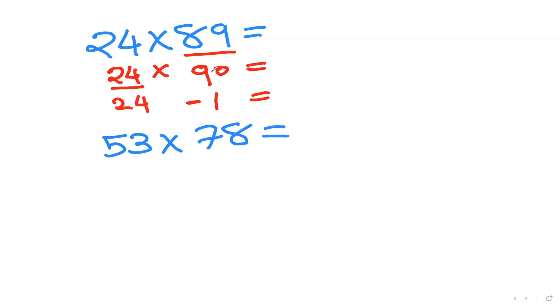So 20 times 90 is 1800 and 4 times 90 is 360. So that together is going to be 2160. And 24 times minus 1 is minus 24. And if you work it out, it's going to be 2136. And that's your answer.